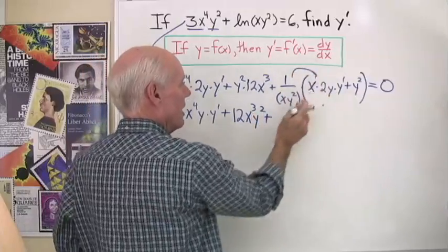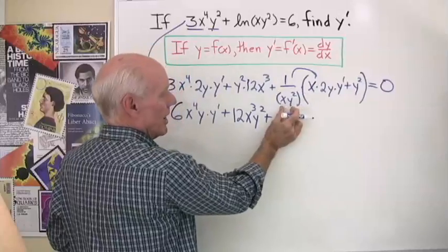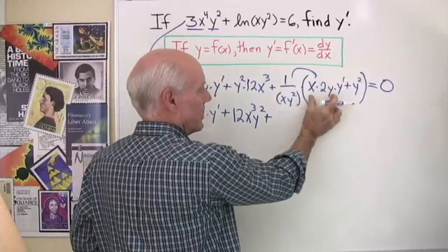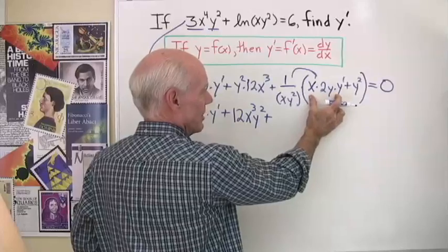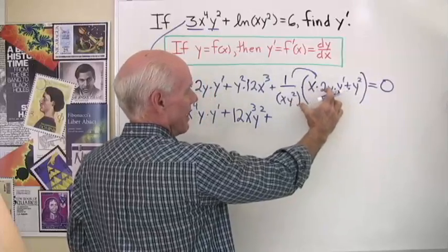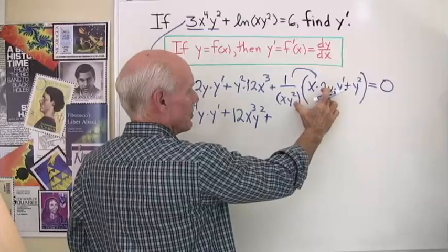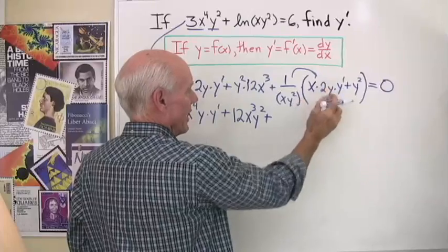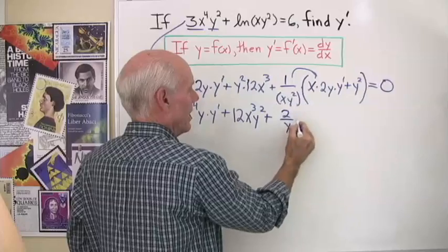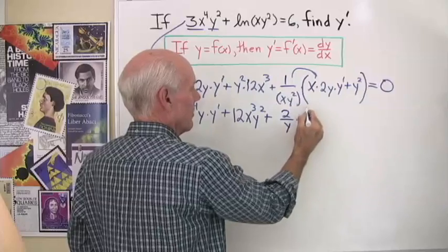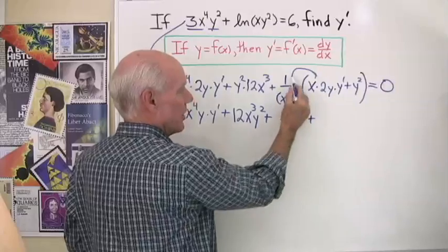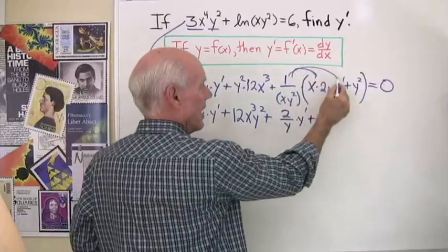Now I'm going to multiply 1 over xy squared times x times 2y times y prime — the x's divide out, one of the y's divides out — so I'll have 2 over y times y prime, plus 1 over xy squared times...